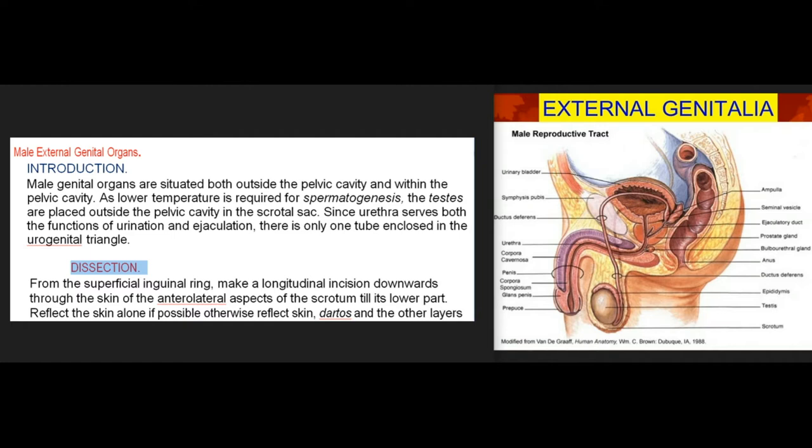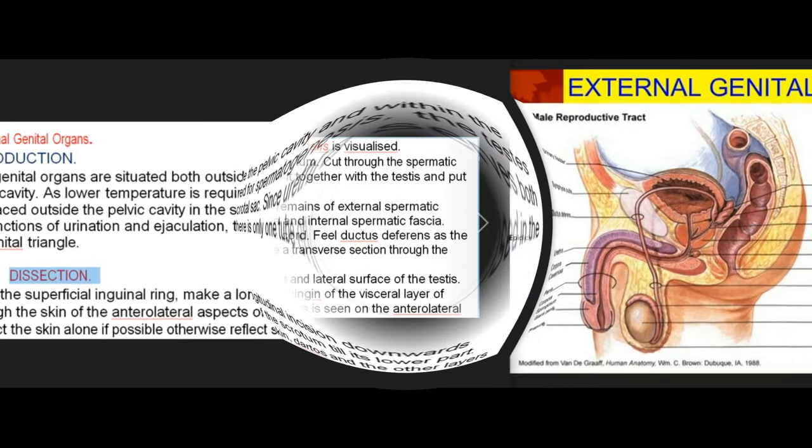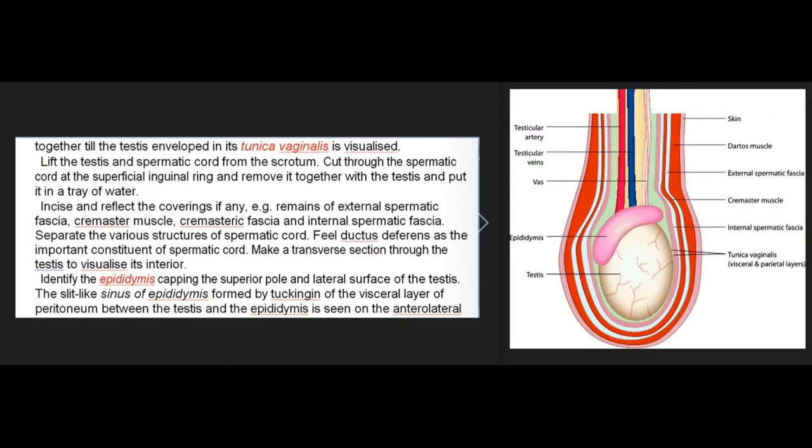Dissection: From the superficial inguinal ring, make a longitudinal incision downwards through the skin of the anterolateral aspects of the scrotum till its lower part. Reflect the skin alone if possible, otherwise reflect skin, dartos, and the other layers together till the testis enveloped in its tunica vaginalis is visualized. Lift the testis and spermatic cord from the scrotum. Cut through the spermatic cord at the superficial inguinal ring, remove it together with the testis, and put it in a tray of water.